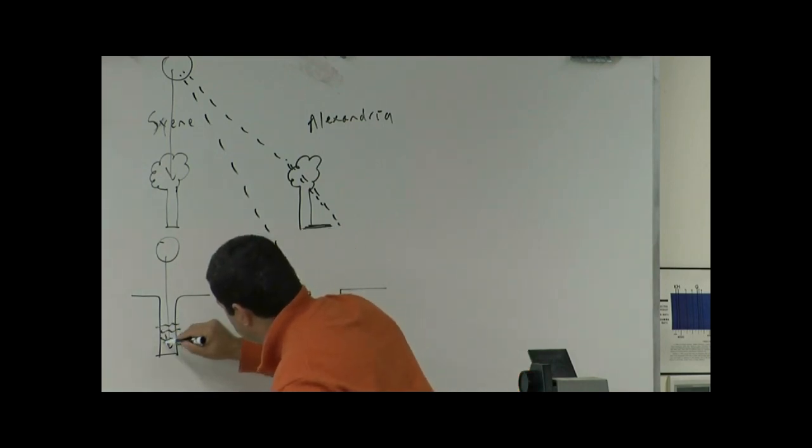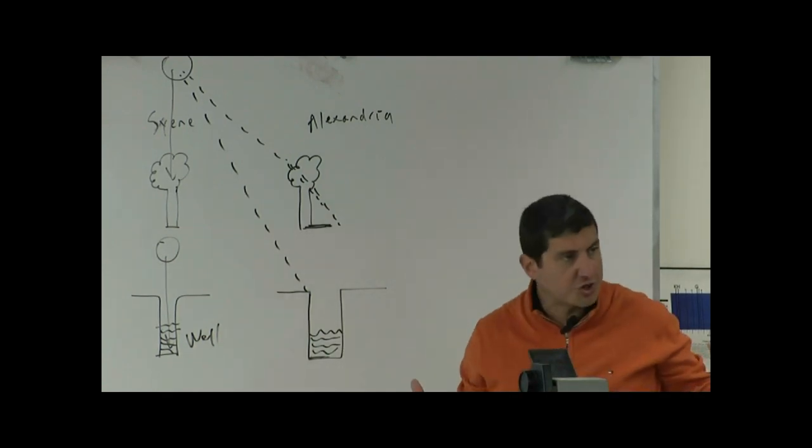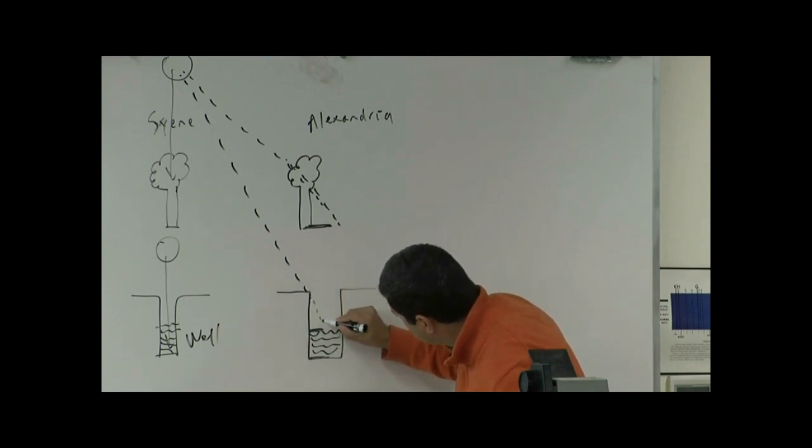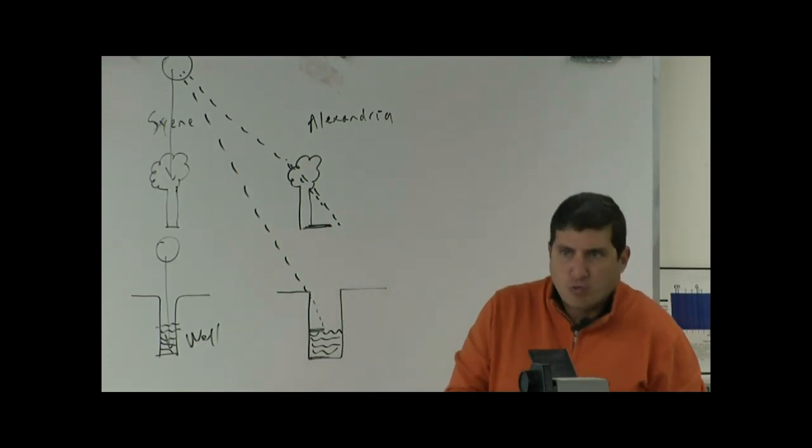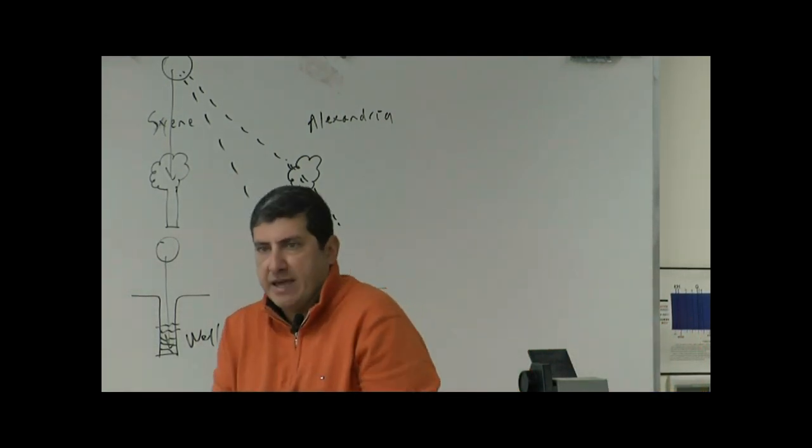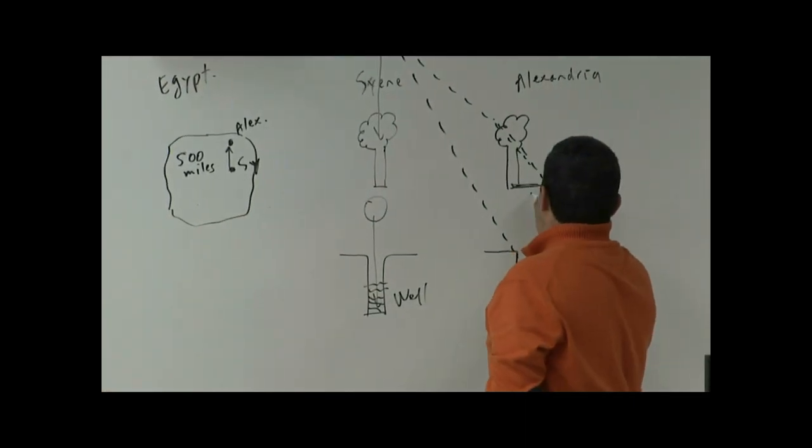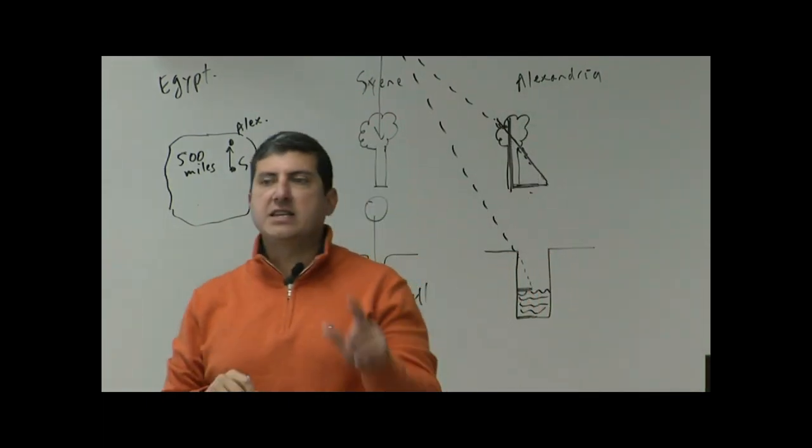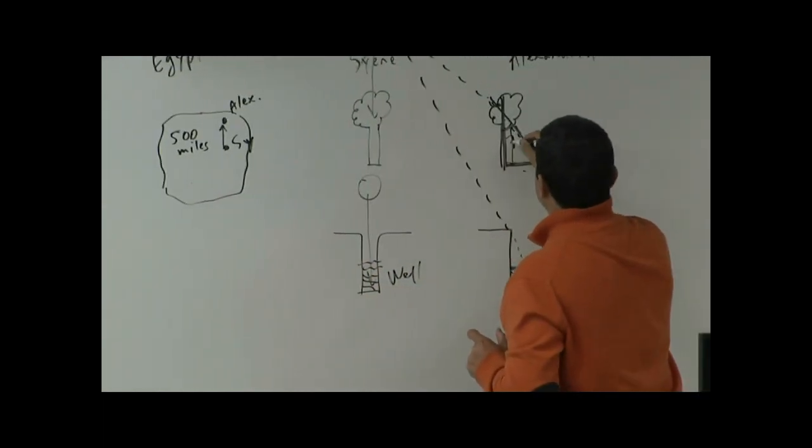So imagine there's water here. Here, you don't - you look in the water and you see no shadow. Over here, you see a tiny bit of a shadow here of the edge. So he looks at the tree, he looks at the well, and then he estimates how long the shadow is. He estimates the height of the tree, and then he estimates that this angle is seven degrees. This angle is seven degrees.